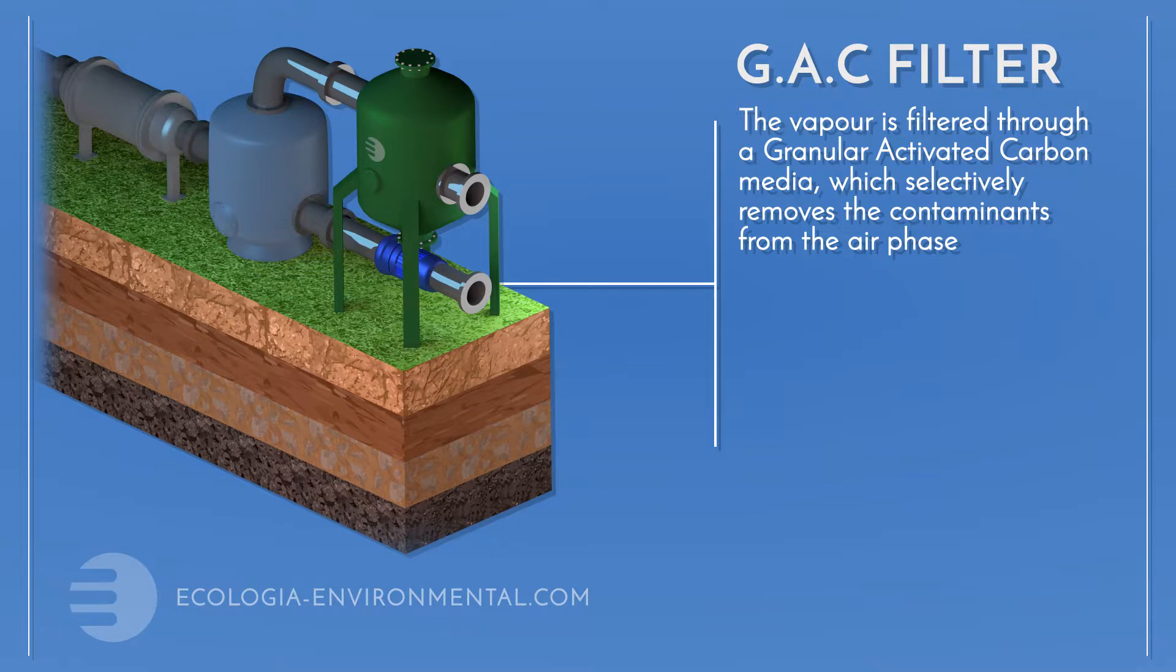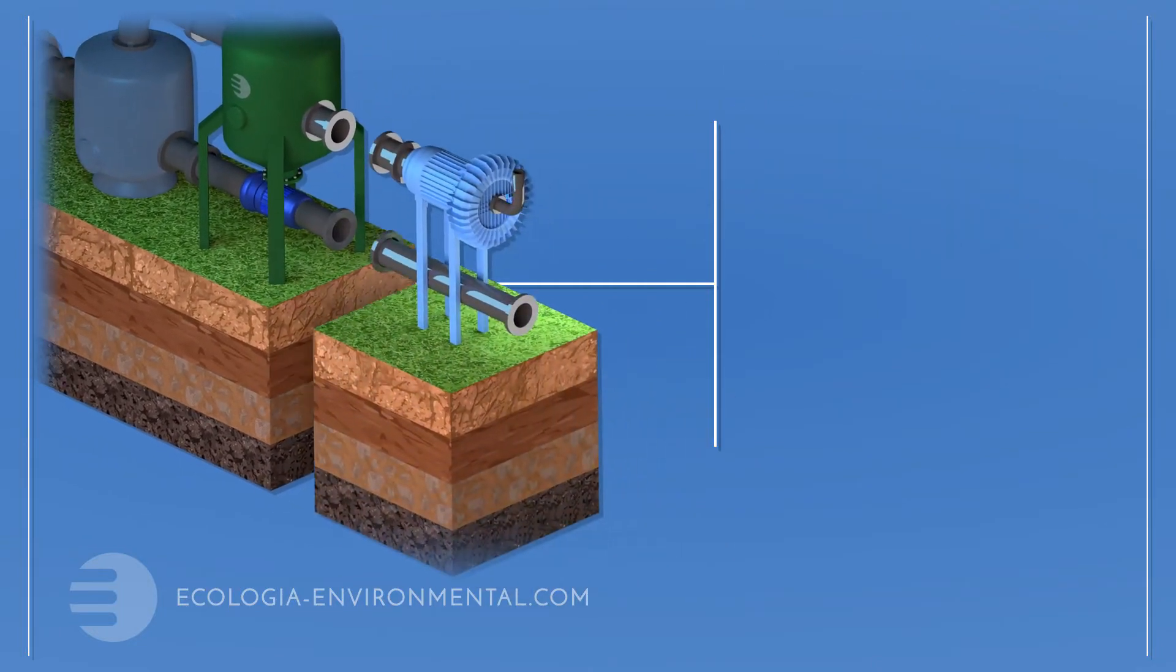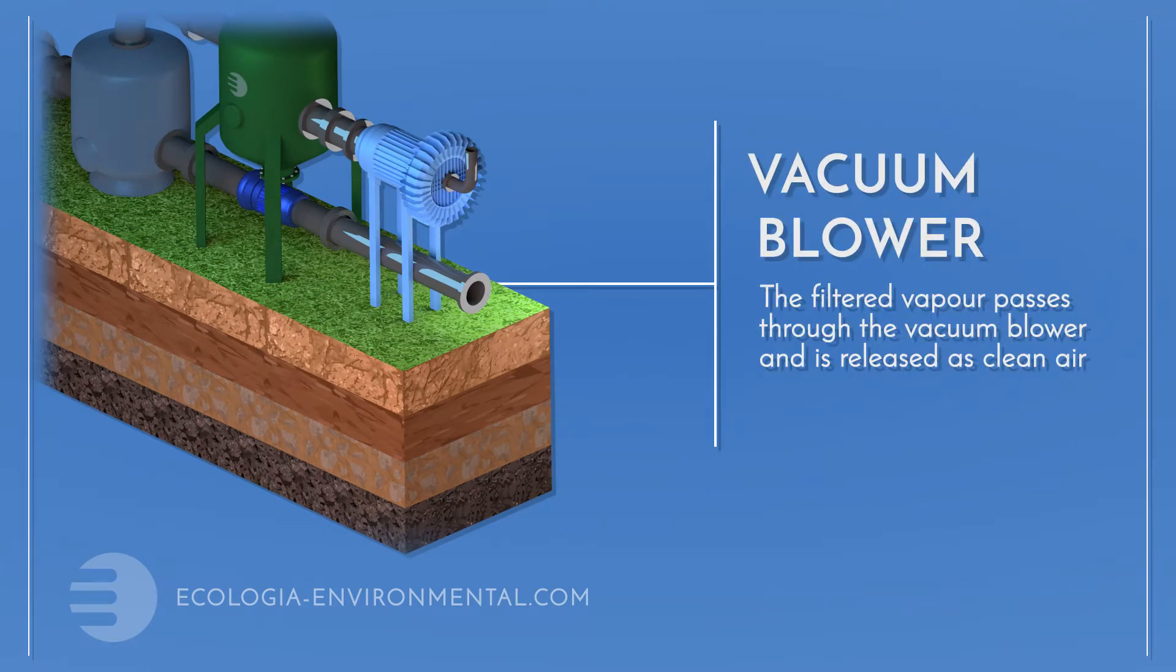This also prevents any explosive vapors reaching the vacuum blower. A single vacuum blower can provide suction to 1, 10, or even 50 extraction wells.